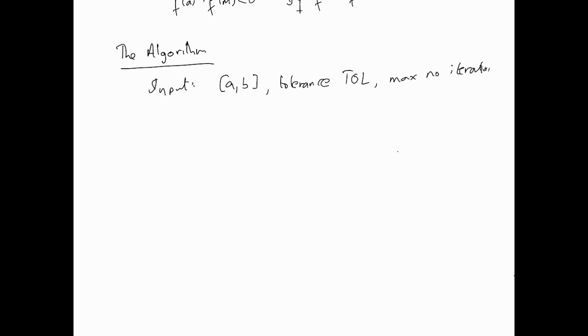That is a safety, basically so that the algorithm doesn't loop forever. And we'll call that, say, N.